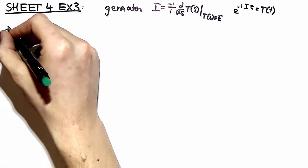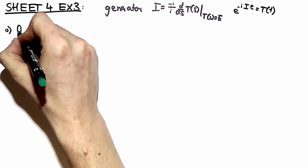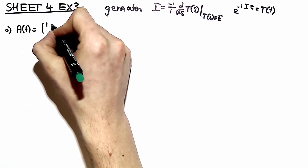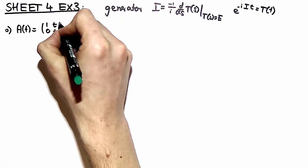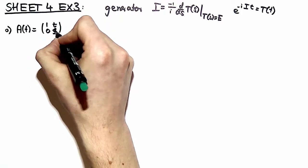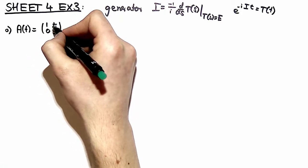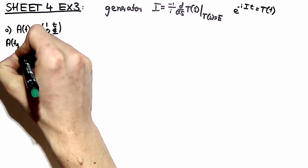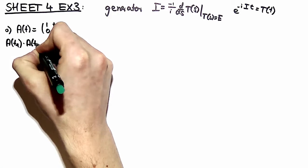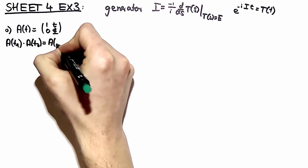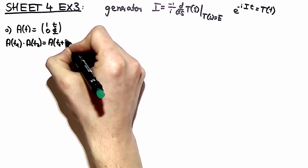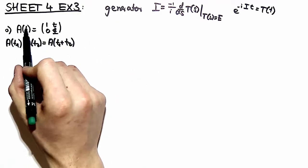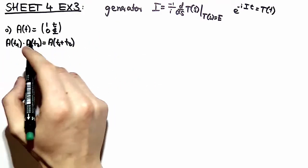In part A of exercise number 3 we define a matrix A of t by taking the identity matrix and on the upper right corner we have the parameter t. We have to show that this is a group and yes it is. If you go into the details of matrix multiplication you can see that the sum of two matrices is still in the parameter space t of this representation.